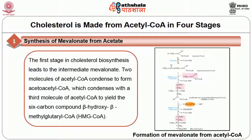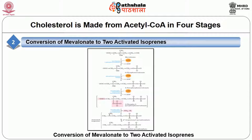Stage two is conversion of mevalonate to activated isoprene. In the next stage of cholesterol synthesis, three phosphate groups are transferred from 3 ATP molecules to mevalonate. The phosphate attached to the C3 hydroxyl group of mevalonate forms the intermediate 3-phospho-5-pyrophosphomevalonate, which is a good leaving group. In the next step, this phosphate and the nearby carboxyl group leave, producing a double bond in the 5-carbon product isopentyl pyrophosphate — the first of the two activated isoprene units central to cholesterol formation. Isomerization of isopentenyl pyrophosphate yields the second activated isoprene, dimethylallyl pyrophosphate.